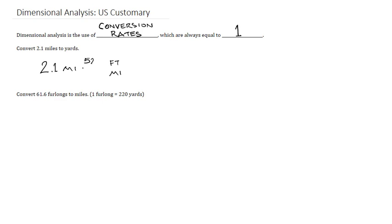We also know that 5,280 feet is one mile. Similarly, we can convert from feet into yards. We can put feet on the bottom, we can put yards on top, and we know that three feet is one yard. And the nice thing about doing dimensional analysis is that the units will divide just as if they were variables. So the miles will divide because we have one on top and one on bottom. The feet will divide because we have one on top and one on bottom.